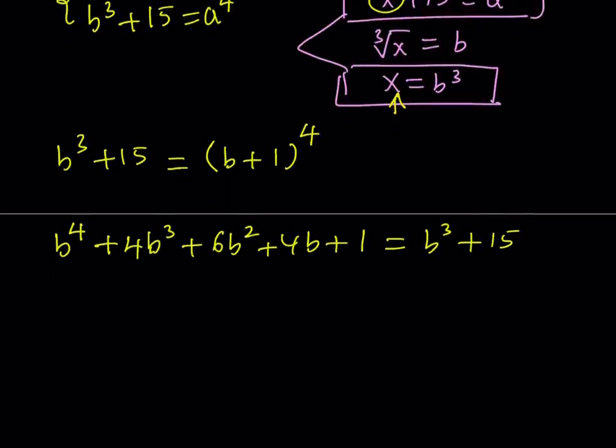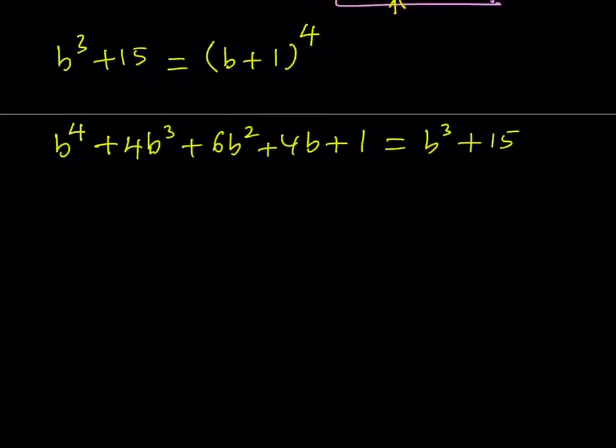Now I want to write this in standard form. Let's go ahead and put everything on the left-hand side so that we get B to the fourth power. Now 4B cubed minus B cubed is going to be 3B cubed plus 6B squared plus 4B, 1 minus 15 is negative 14. Now one of the things that we've been talking about when we did equations on radicals or polynomials is what? Remember that? Checking the sum of the coefficients. Why? Because if the sum of the coefficients of a polynomial is 0, then 1 is a solution.